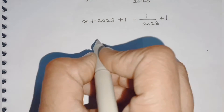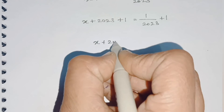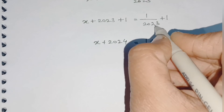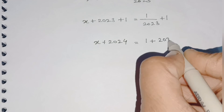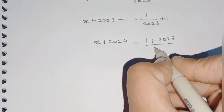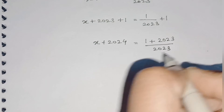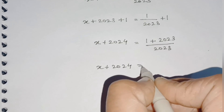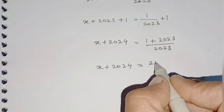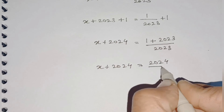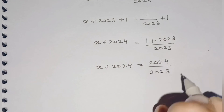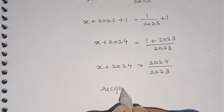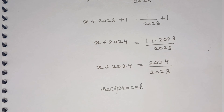This becomes x + 2024 is equal to — taking the LCM to make the denominator equal — this will become (1 + 2023) over 2023. The left-hand side is x + 2024, and the right-hand side will be 1 + 2023, that is 2024 over 2023.